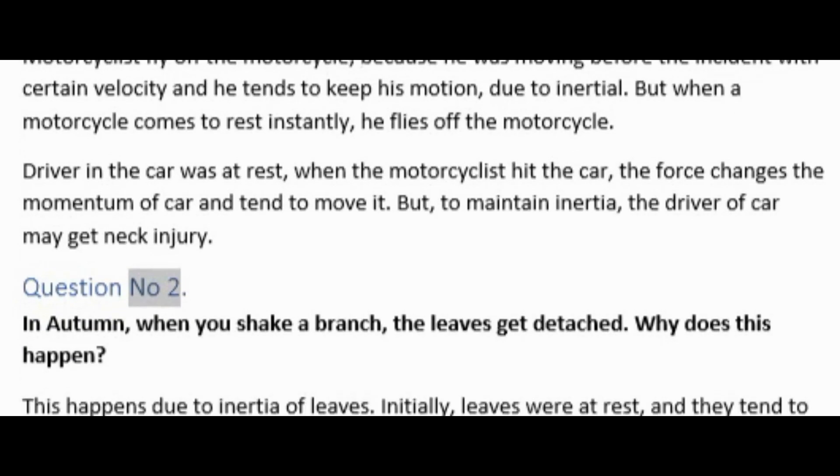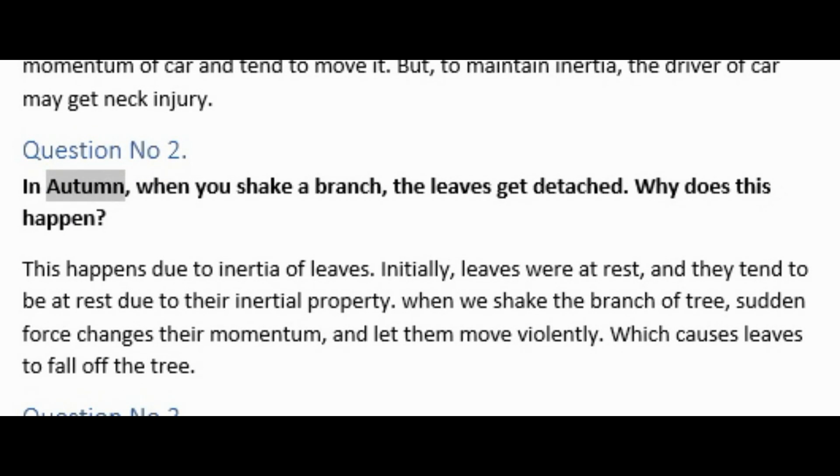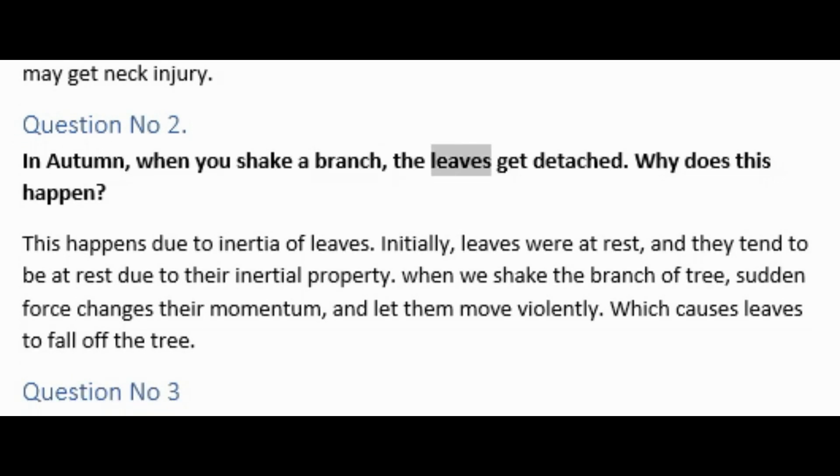Question number two: In autumn, when you shake a branch, the leaves get detached. Why does this happen? This happens due to inertia of leaves. Initially leaves were at rest and they tend to be at rest due to their inertial property. When we shake the branch of tree, sudden force changes their momentum and lets them move violently, which causes leaves to fall off the tree.